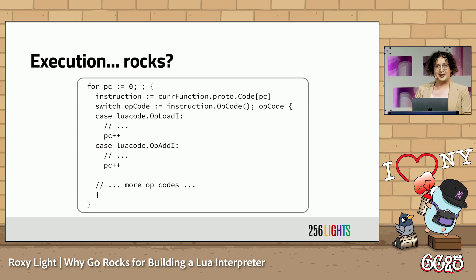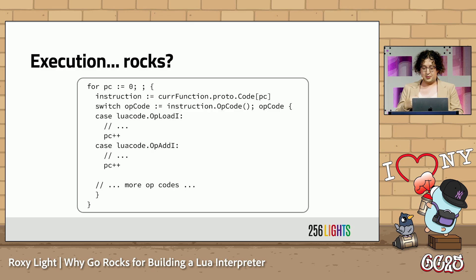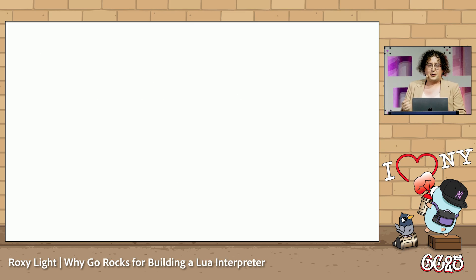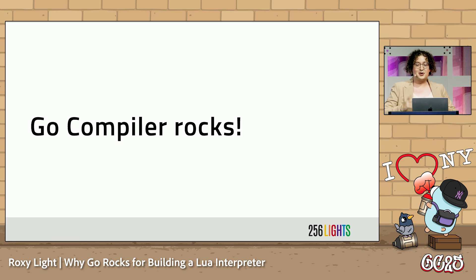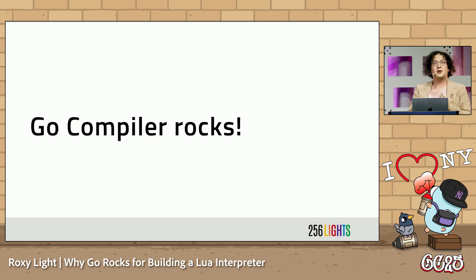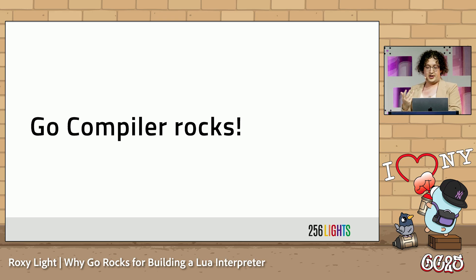That's the elbow grease I was talking about earlier. Each case does an operation that moves the program counter forward — fairly bog-standard code. But it turns out the Go compiler optimizes this sort of giant switch statement using a technique called jump tables, so I can write this giant switch statement and Go helps make it faster than writing a bunch of individual if statements.